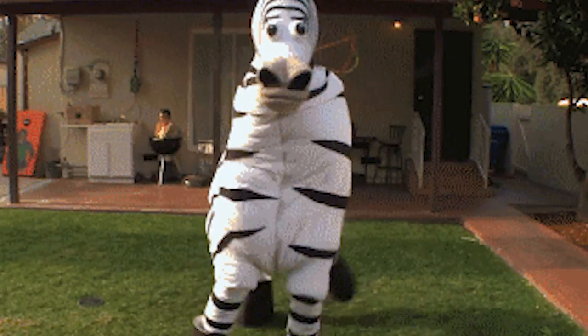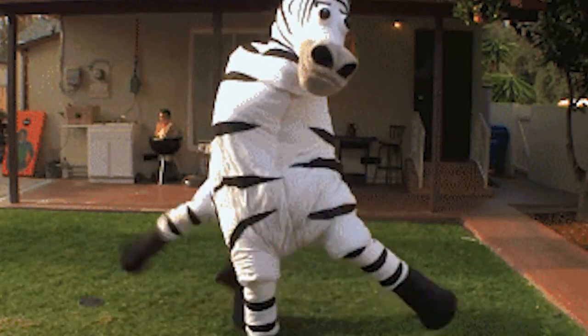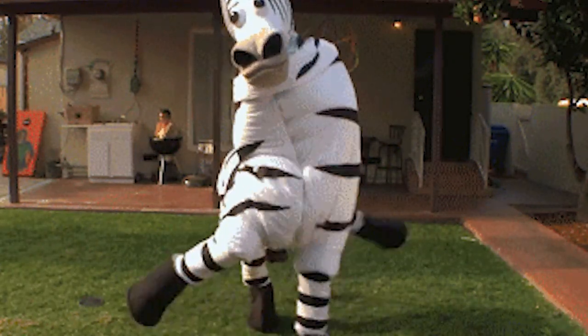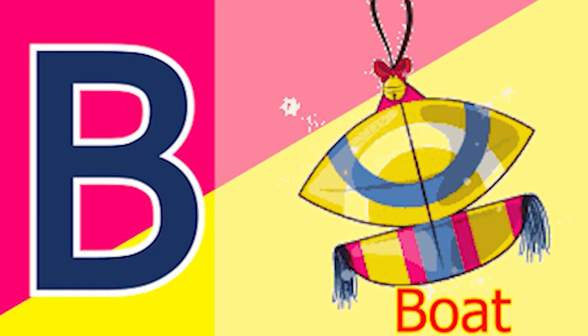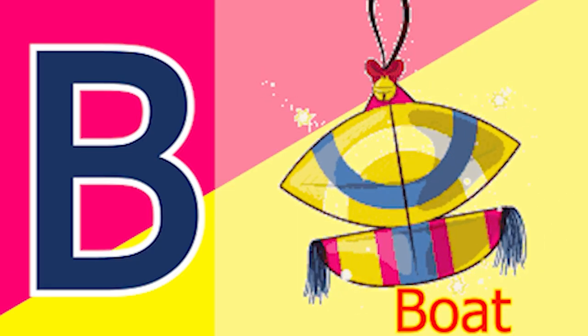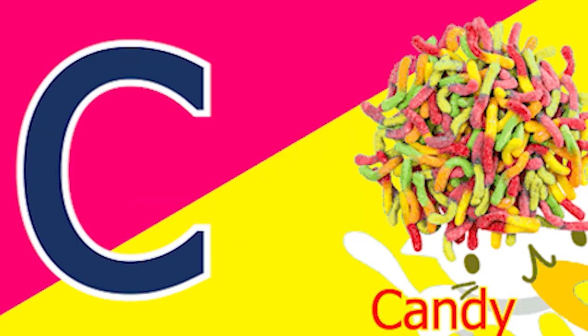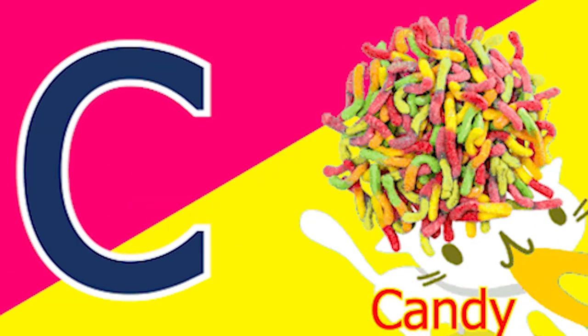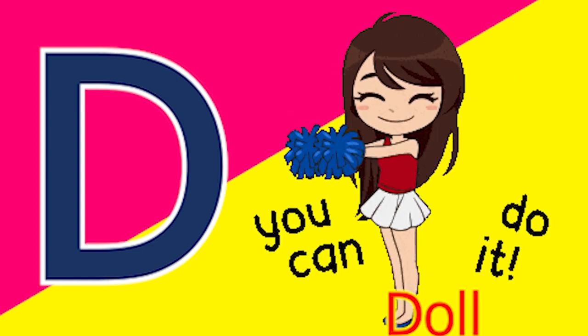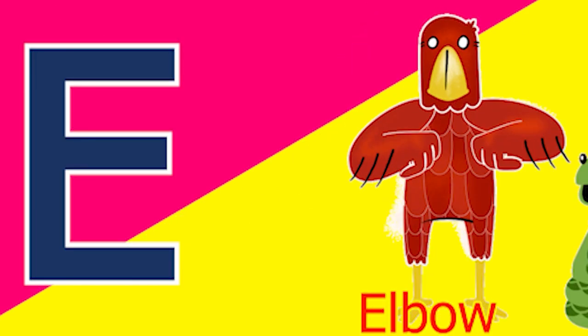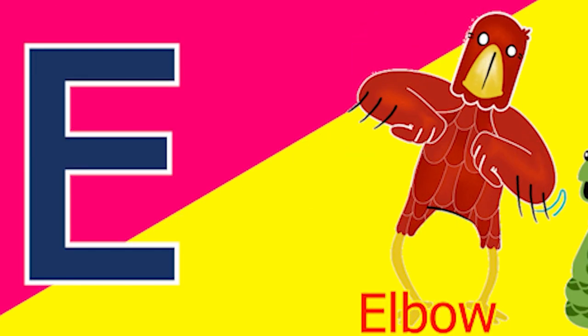Z, Z, Z for zebra. A for aeroplane, B for boat, C for candy, D for doll, E for elbow.